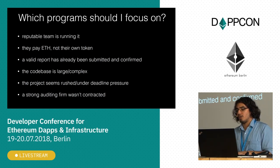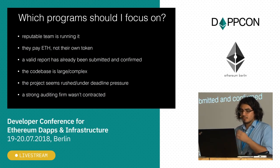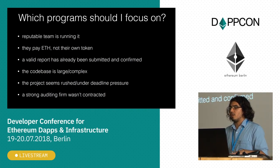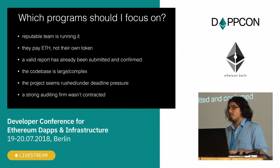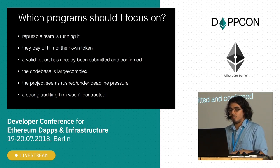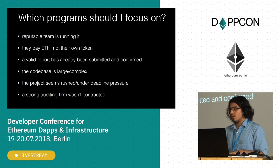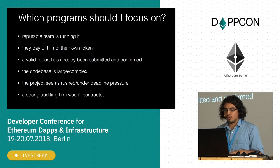If they have a quite short bug bounty period and they need to launch right after it, that's something I would focus on more. Also, if a strong auditing firm hasn't been contracted — usually before going to bug bounty these projects would go through an audit first — that's a way of making sure you've caught all the low-hanging fruit at minimum, and hopefully all the criticals and majors. If you go to bug bounty without an audit, you're probably going to end up spending a lot more money. So if there hasn't been a strong auditing firm contracted, I'll take a look as well.